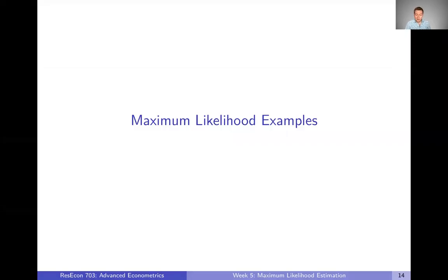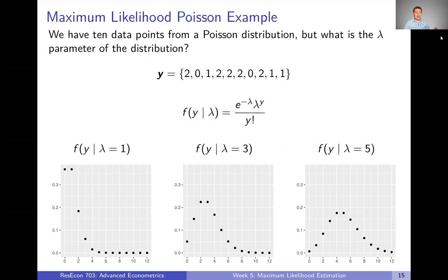In the last two videos, we talked about maximum likelihood estimation broadly, and then more formally defining maximum likelihood and the maximum likelihood estimator. Now we're going to actually work through some examples applying that estimator in practice. Let's start with a simple example: the Poisson distribution.